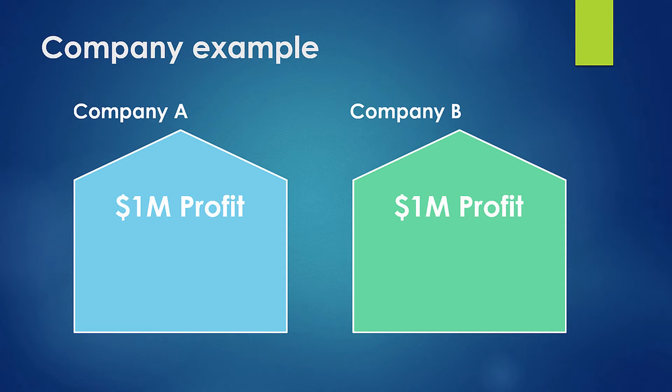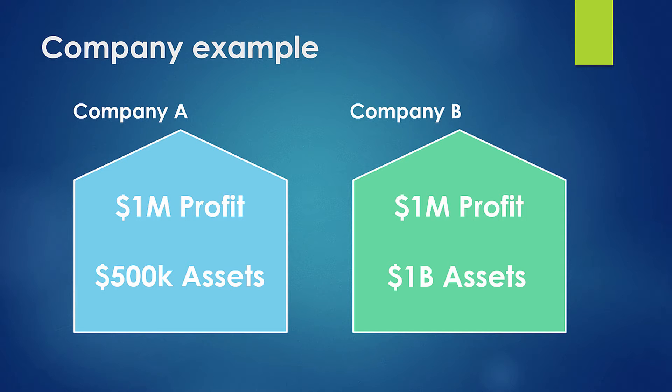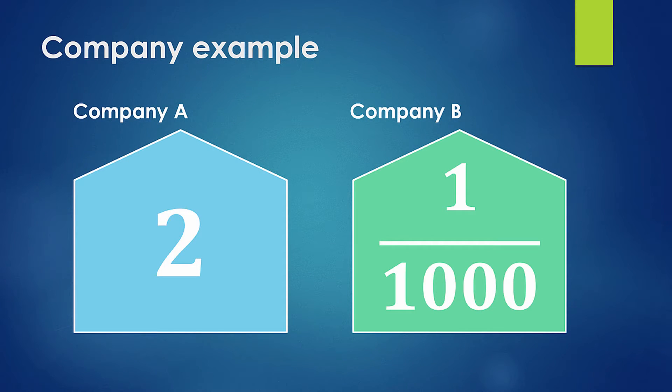If you had a company where you had a million dollars in profits, is that good or bad? It's kind of hard to say without context. If we had two companies — Company A and Company B — and they both produced a million dollars of profit, it could be two very different stories. One company had five hundred thousand dollars in assets and generated a million dollars, versus another company that had a billion dollars in assets and only generated a million dollars. In terms of productivity, the first has a ratio of two to one, while the billion-dollar business had a ratio of one one-thousandth to one.